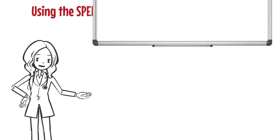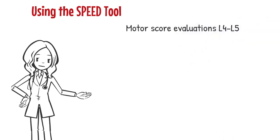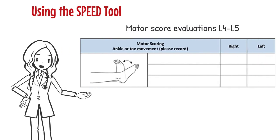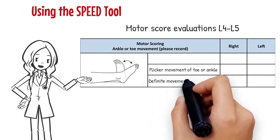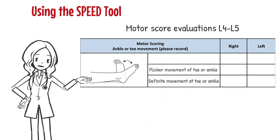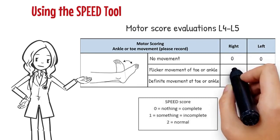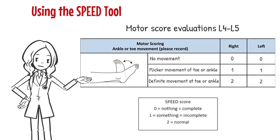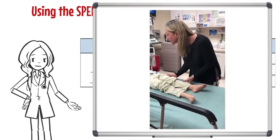Movement of the ankle or toe evaluates motor function at the L4-L5 level. Ask the patient to wiggle the toes or the entire foot. Normal movement indicates a normal exam. A flicker or minimal voluntary movement of the foot suggests the presence of an incomplete spinal cord injury at this level. The inability to move the ankle or toe suggests a complete spinal cord injury at this level. Remember to perform this assessment on both feet. Can you move your feet?